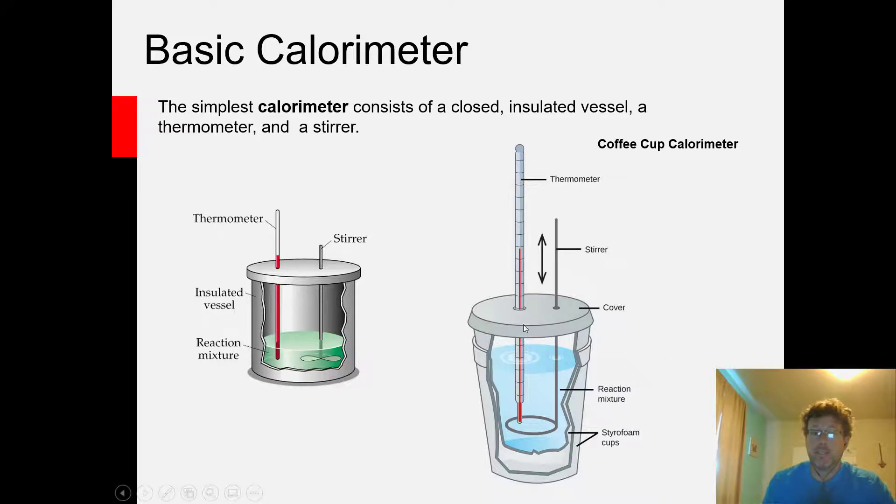Basically you assemble your calorimeter—insulated walls, lid, thermometer, stirrer—and then you set whatever chemical reaction or physical process that you want to measure inside the calorimeter. If your reaction is exothermic, something like an acid-base neutralization happening in water, any heat that comes out of the chemical reaction is trapped in the water inside the calorimeter.